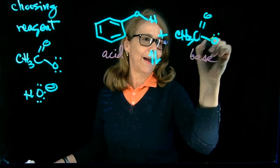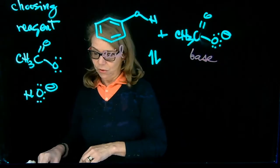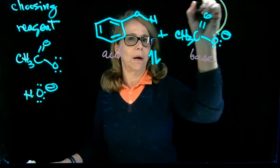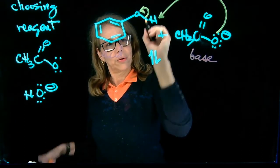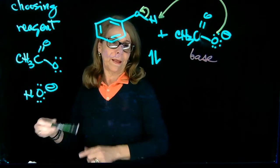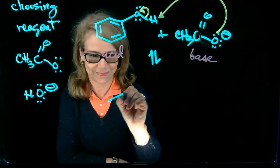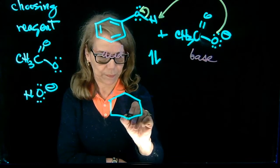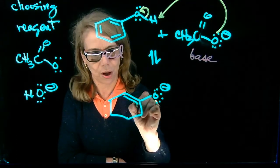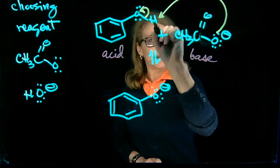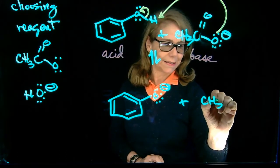Here we have lone pairs, right? So next step will be drawing an arrow from the base to the proton here. And now you're going to assign the electrons here at the bond to the oxygen. So my products are this ion, which is your conjugate base of phenol. That's called phenolate. And then by getting this proton, this is going to become acetic acid.